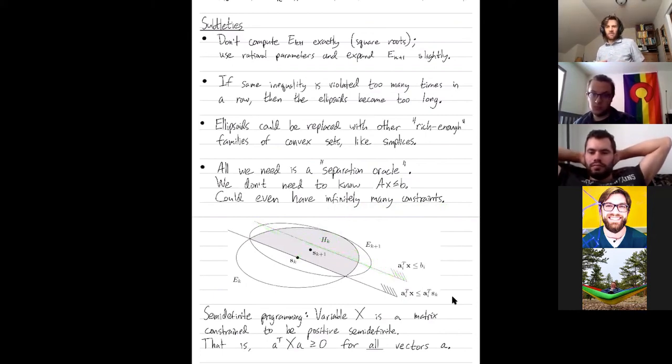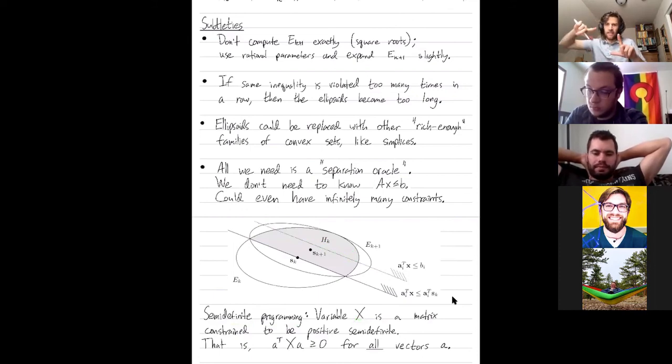Where this comes up and where the ellipsoid method is actually used in practice is sometimes in semi-definite programming. So what is that? Variable x is no longer a vector, it's a matrix. It's still just a list of real numbers, but reshape it as a matrix instead of a vector. And then it's called semi-definite programming because you constrain this square matrix to be positive semi-definite.